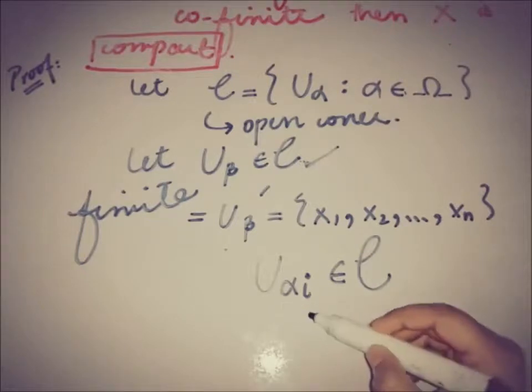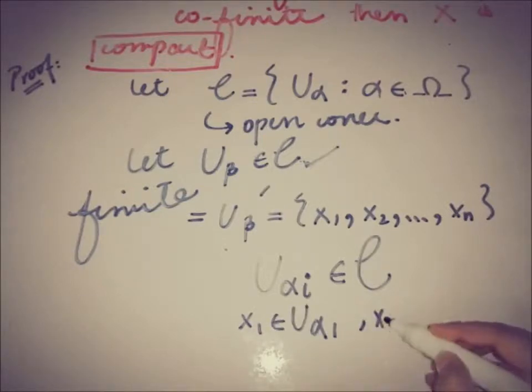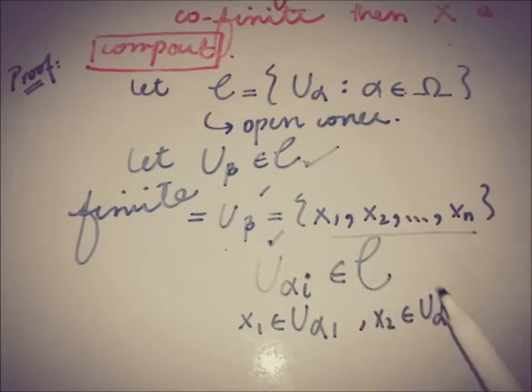x₁ belongs to U_α₁, and x₂ belongs to U_α₂, and so on to x_n belongs to U_αₙ. As all of the elements from that finite set are eventually taken from that C, that open cover,